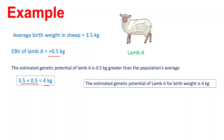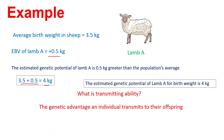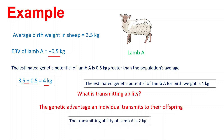Transmitting ability is the genetic advantage an individual transmits to the offspring, and it is half of the EBV because an offspring receives half of its genes from one parent. The other half are transmitted from the other parent. So, the transmitting ability of lamb A is 2 kg.